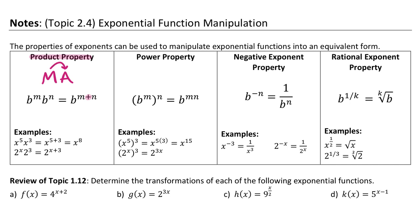For example, if you have x to the fifth times x to the third, you add them — that's x to the eighth. If you have two to the x and two to the third, you still add those exponents. The bases stay the same, so it's two to the x plus three.